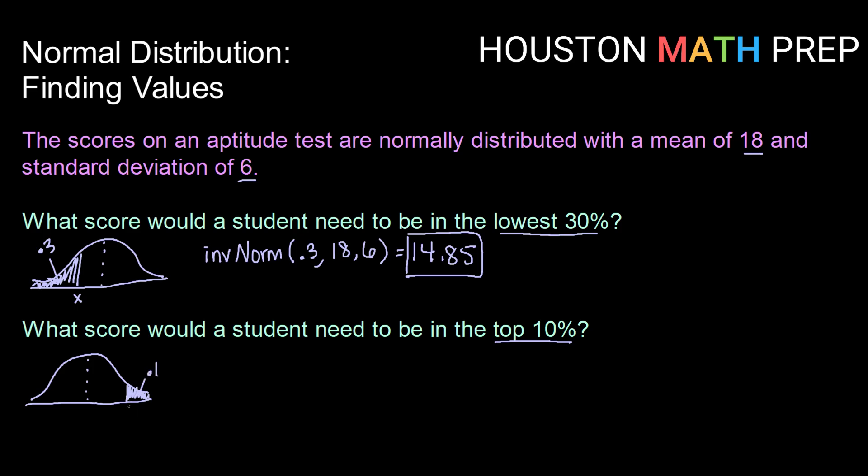So if I am working with top 10%, that right there is area to the right of the particular value we're interested in. But when we use inverse norm, we have to feed it area to the left.